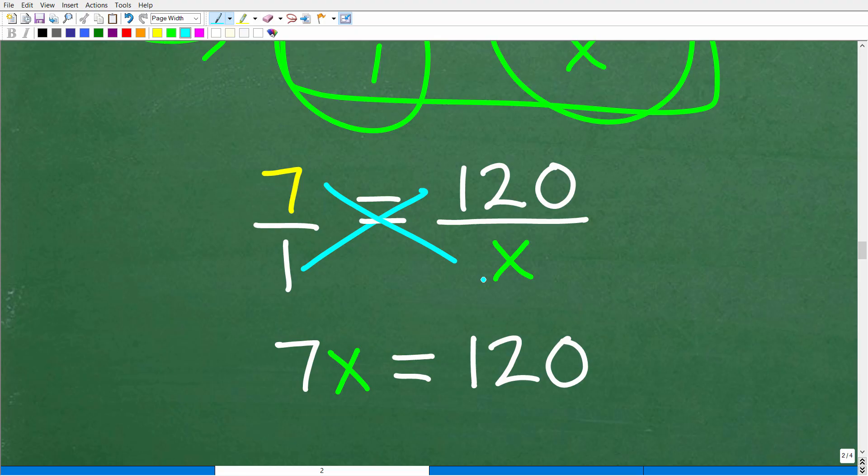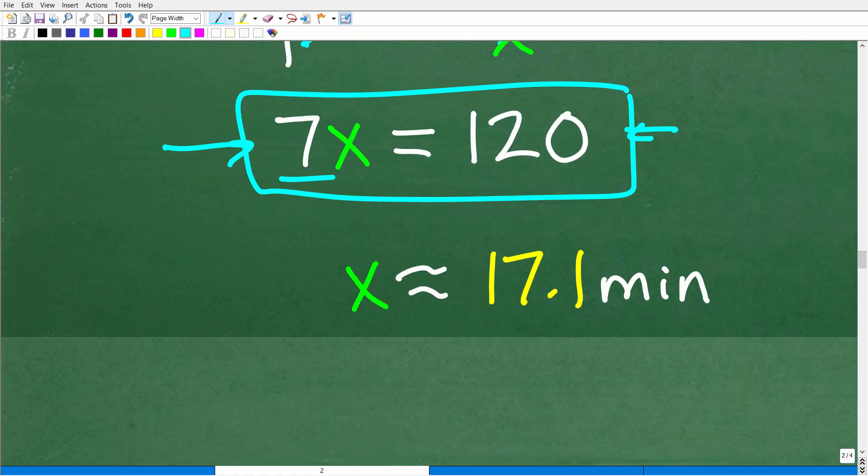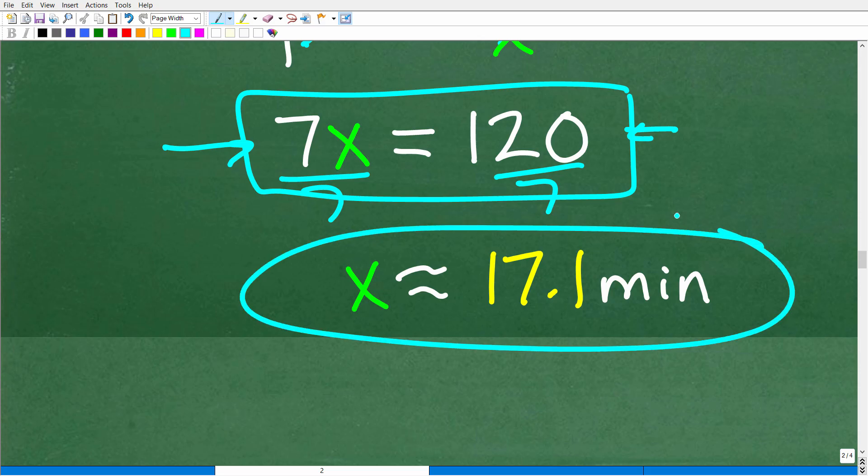Now we're down to 7x = 120. To solve for x, all we have to do is divide both sides of the equation by 7. So 120 divided by 7 is approximately 17.1 minutes.